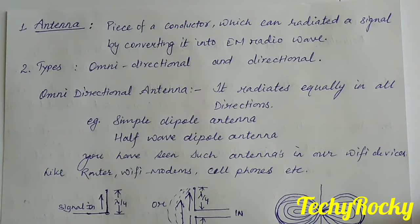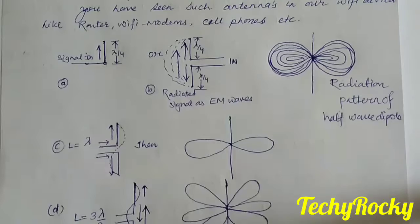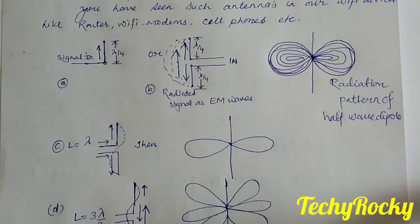Examples of omnidirectional antennas are the simple dipole antenna and the half-wave dipole antenna. Directional antennas include the beam antenna, parabolic reflector antenna, and others. Let us now look at the dipole antenna.